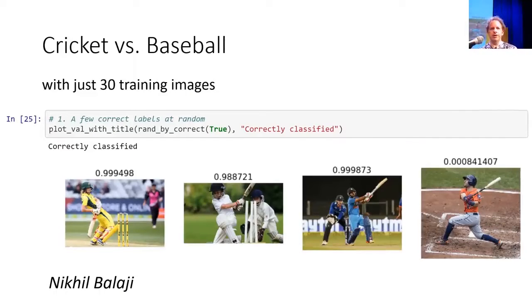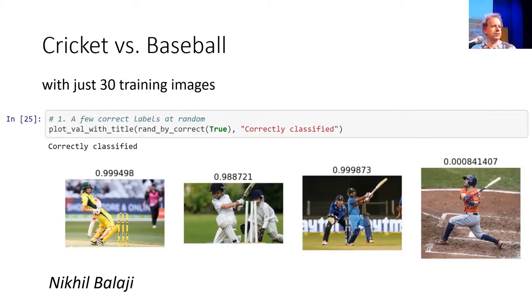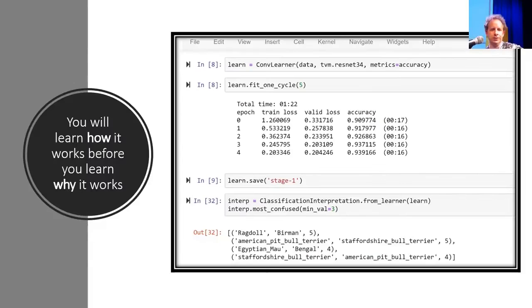What are you going to be able to do by the end of lesson one? This is an example from Nick Hill — he downloaded 30 images of people playing cricket and people playing baseball, ran the code you'll see today, and built a nearly perfect classifier distinguishing which is which. That's the kind of thing you can build with fun hobby examples like this, or in the workplace for direct commercial value.